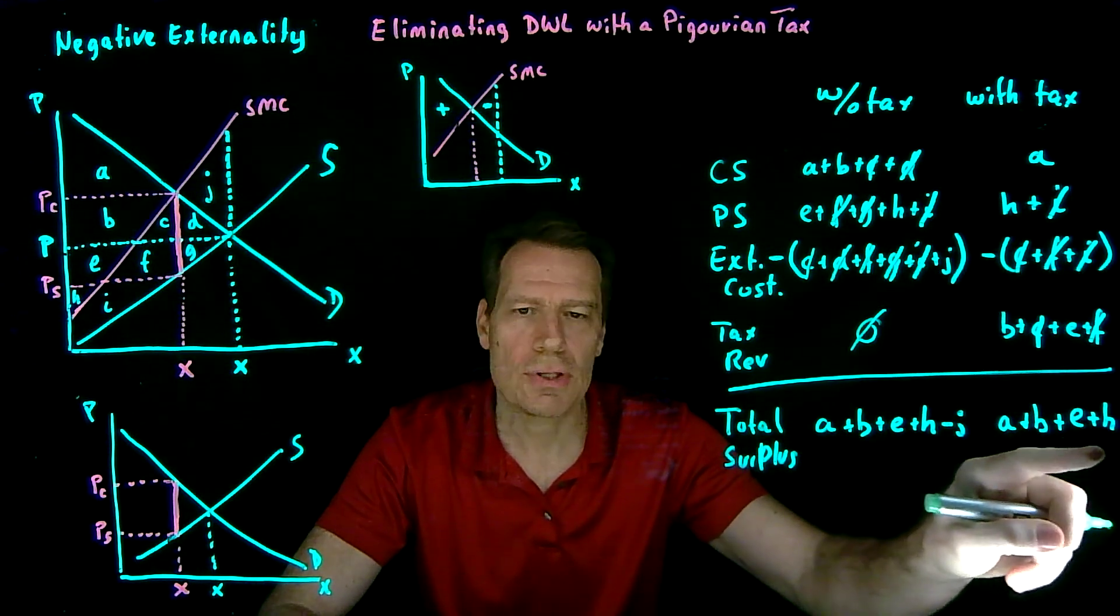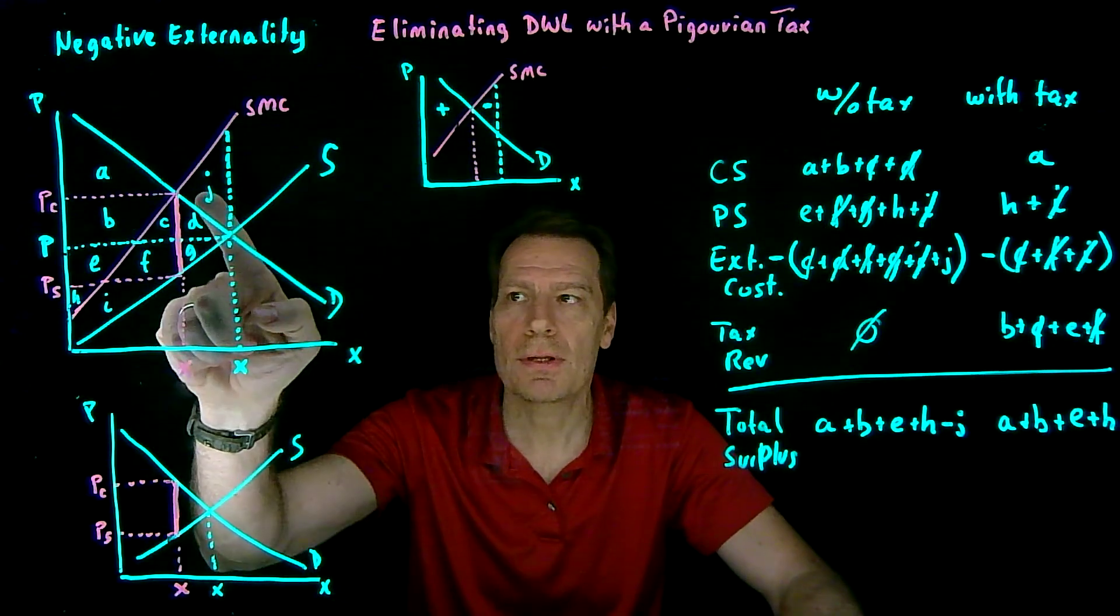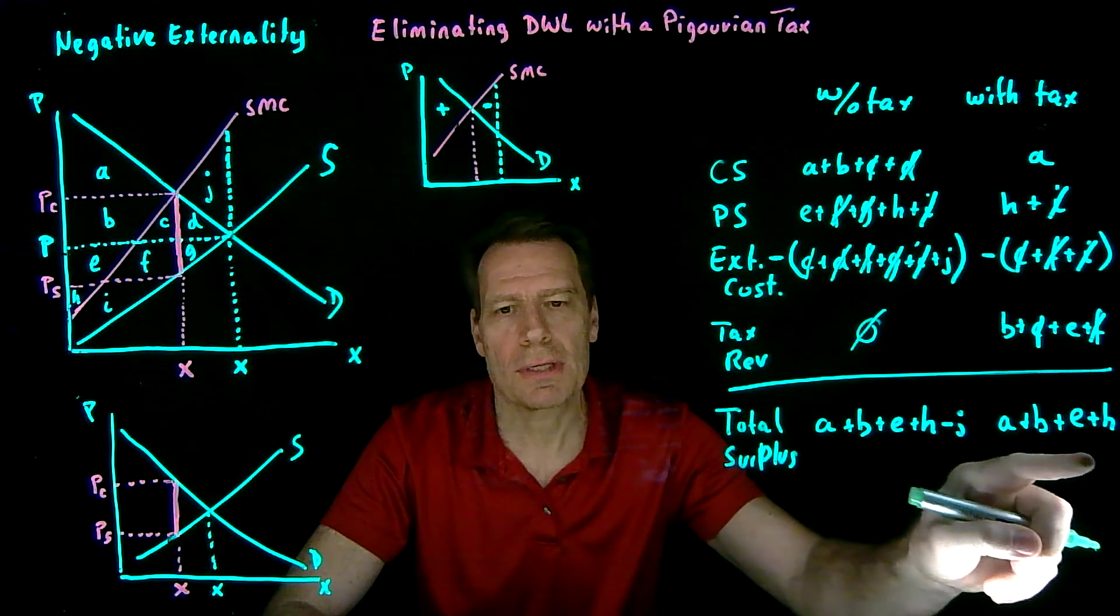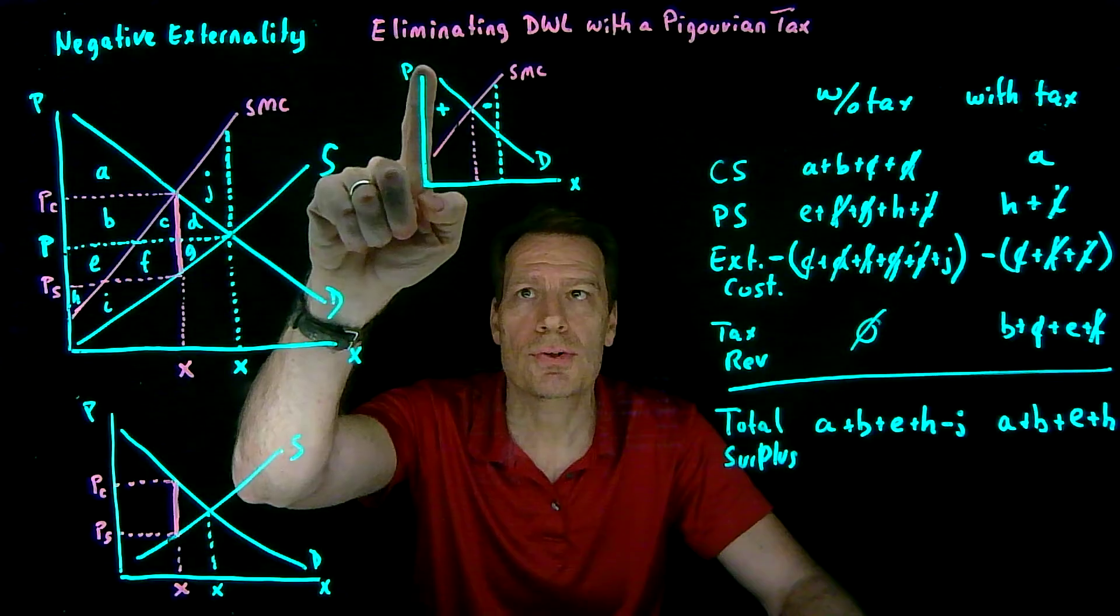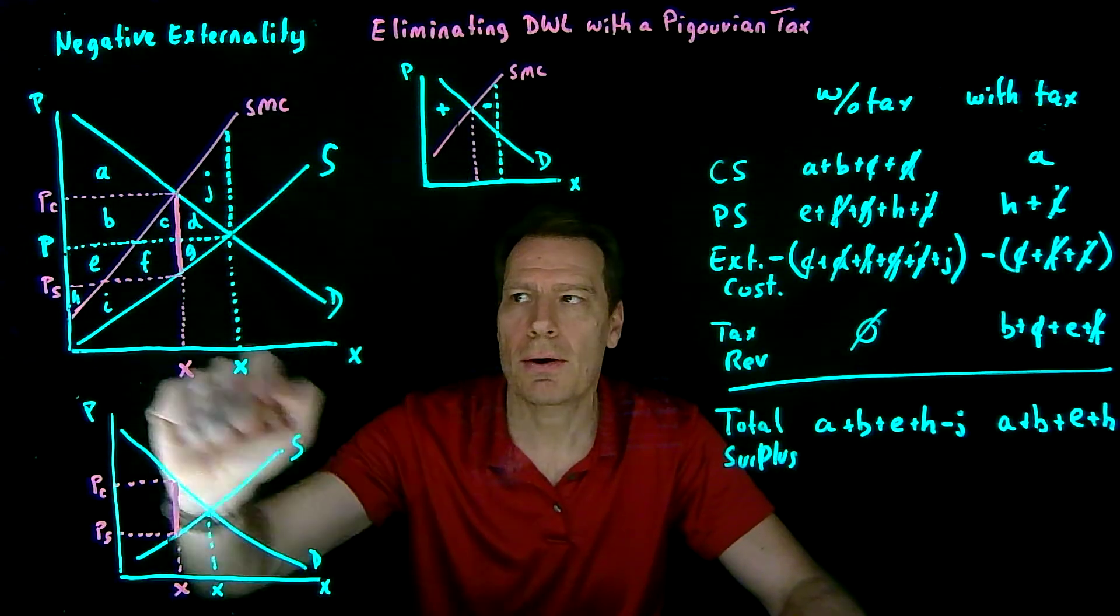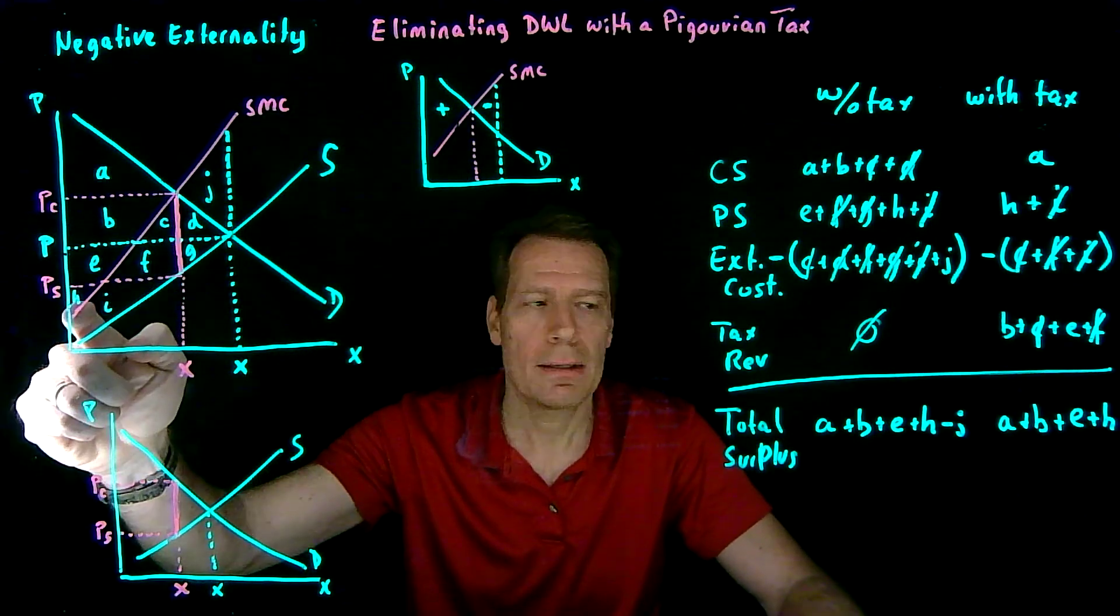So there's no minus J here. We got rid of the deadweight loss by imposing the tax. And we're left with just this positive surplus area, A, B, E, and H.